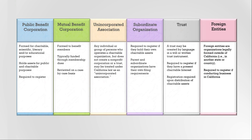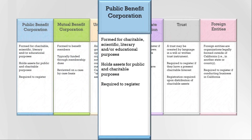Non-profit public benefit corporations are created to serve the public for charitable purposes and cannot be organized for the private gain of any person. A public benefit corporation cannot distribute profits, gains, or dividends to any person. All non-profit public benefit corporations operating in California,